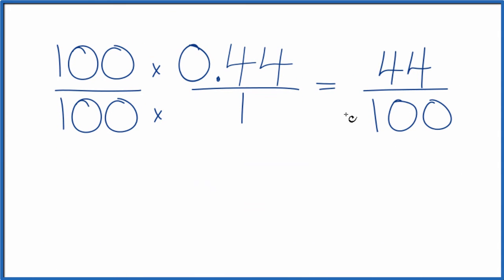So 44 divided by 2, that's 22. And 100 divided by 2, that's 50.